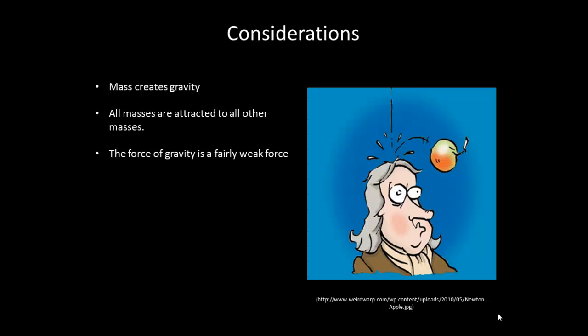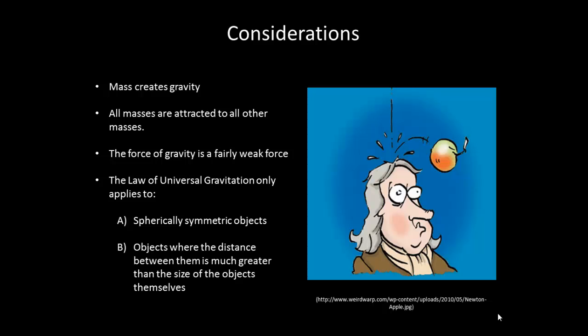The law of universal gravitation only applies to spherically symmetric objects, and objects where the distance between them is much greater than the size of the objects themselves. Now note, while this is true, and we use gravity all the time on objects like people on the Earth, we will often be able to approximate objects to be symmetric and approximate distances to be large.